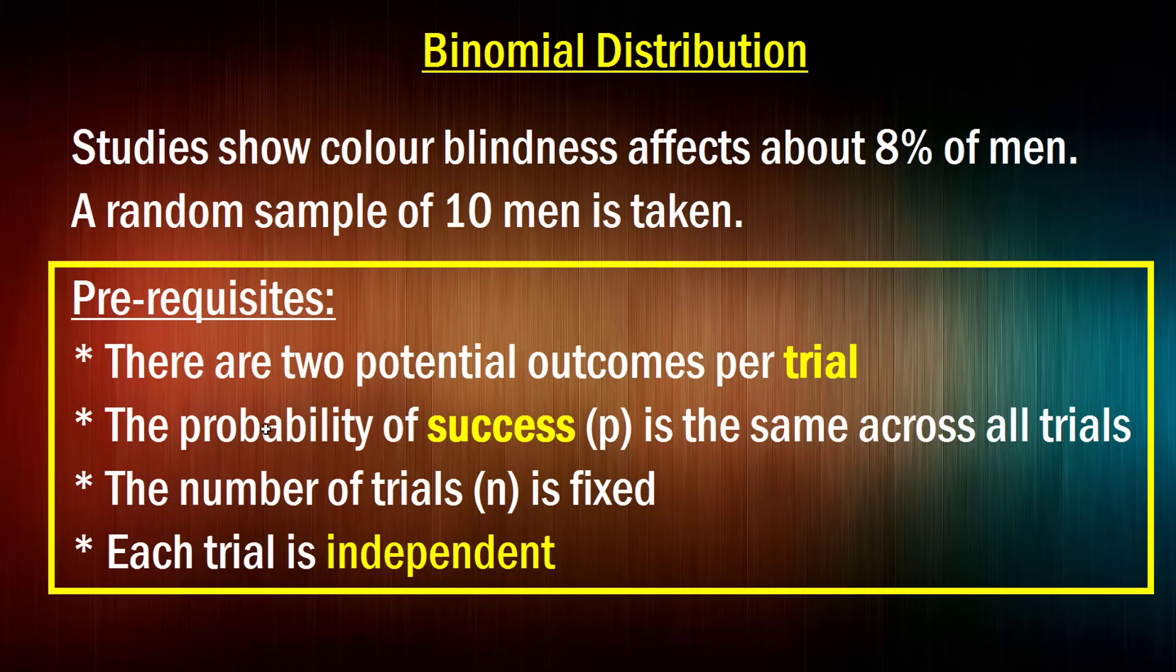The second prerequisite is that the probability of success, which we're going to call P here, is the same across all trials. Now, again, success is a general term you'll hear when talking about binomial distributions. Technically, success here means having colorblindness, which doesn't sound like a success to celebrate, but it's a statistical success nonetheless. So in this case, P is going to be 0.08 or 8%. The number of trials is fixed, so that's 10 men. And each trial is independent. So whether or not the first man has colorblindness doesn't affect the second man's chance of having colorblindness. So it seems that, at least in theory, this setup follows a binomial distribution.